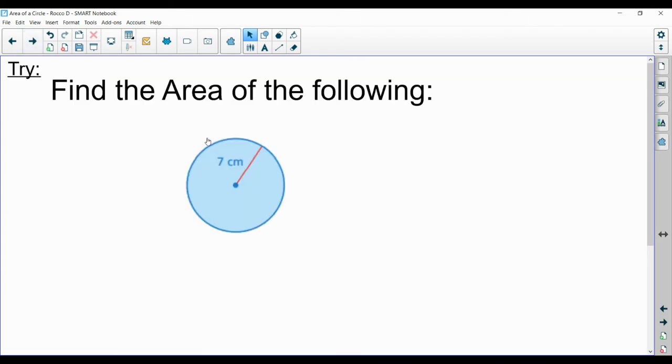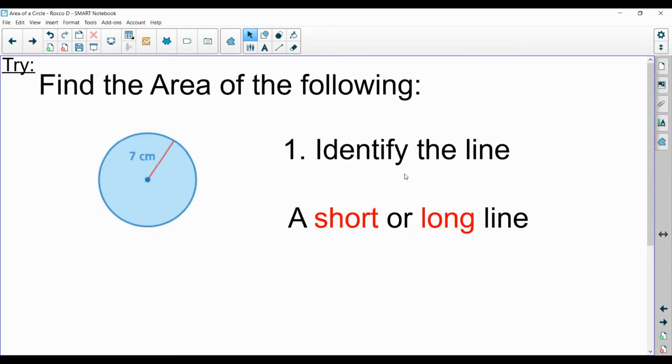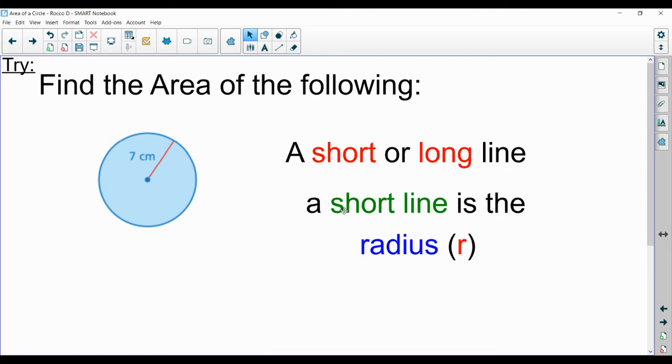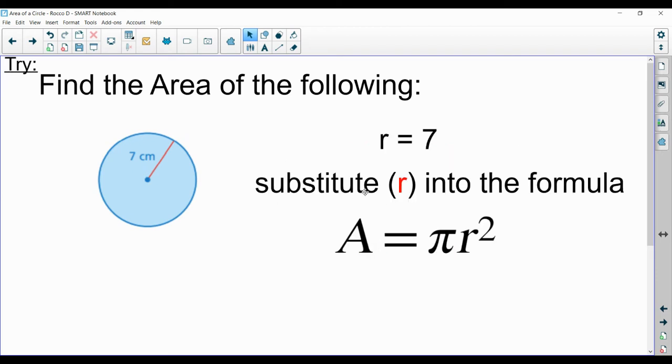Let's try to find the area of this circle here we have. We have seven centimeters, and we have a line here. Our thing is to identify the line, if it is short, or is it a long line? What do you think, Rocco? I'm looking at it. It's not cutting the circle in half, and it's just going from the center to the edge. It seems kind of small to me. So I would say short. And it is a short line. A short line is called the radius. So we're dealing with the radius. The seven centimeters is a radius. Now that you know that, Rocco, you can now have the radius equal seven centimeters. You can substitute that radius into your formula.